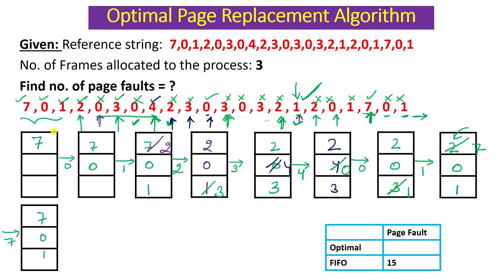So here you can see how many page faults were generated by the optimal page replacement algorithm for this reference string. Counting the total ticks: 1, 2, 3, 4, 5, 6, 7, 8, 9. A total of nine page faults were generated. For the same reference string with the same three frames, in the other video we saw that 15 page faults were generated with FIFO. So the optimal page replacement algorithm is far better — only nine page faults, nearly half of 15.